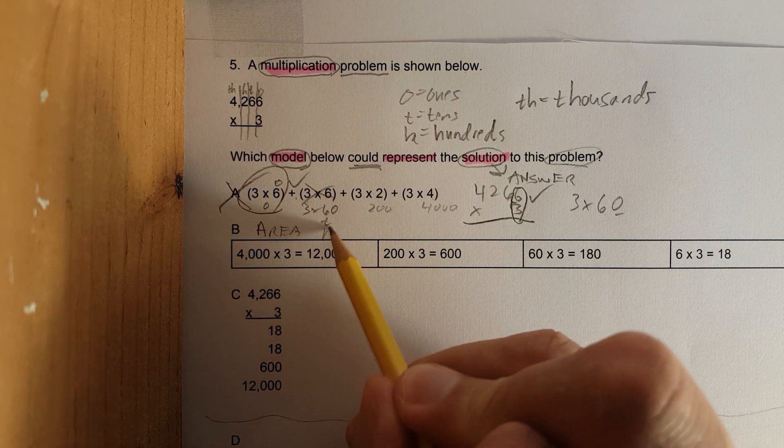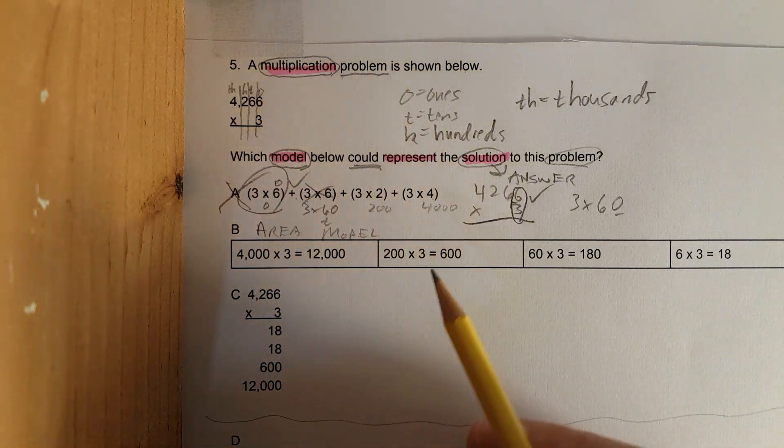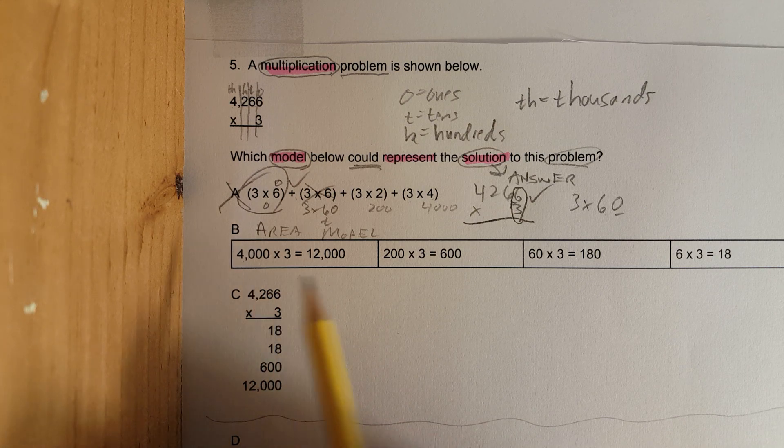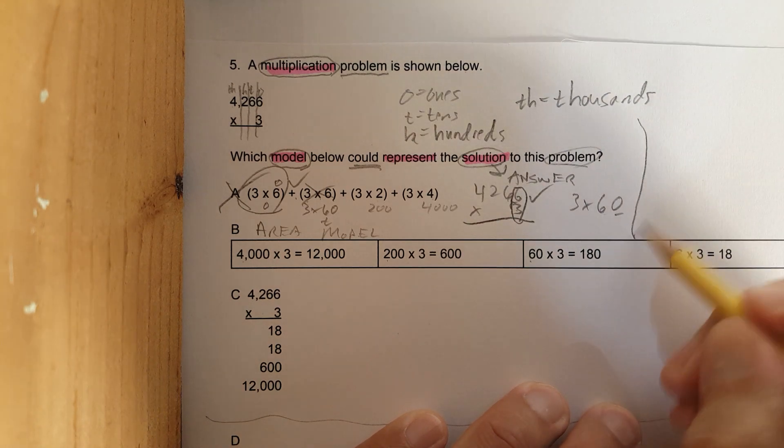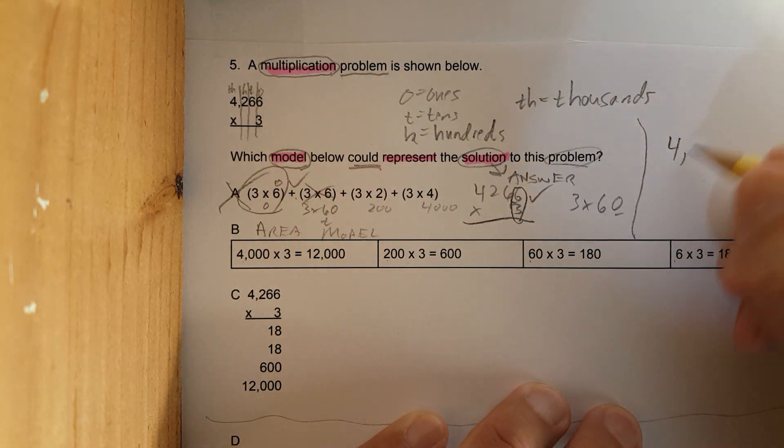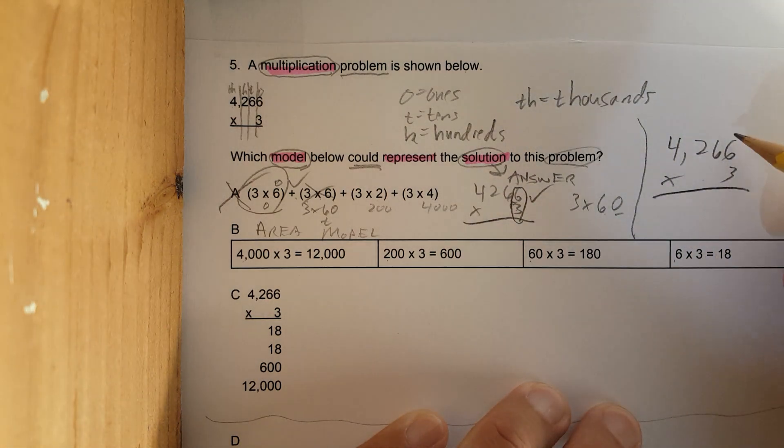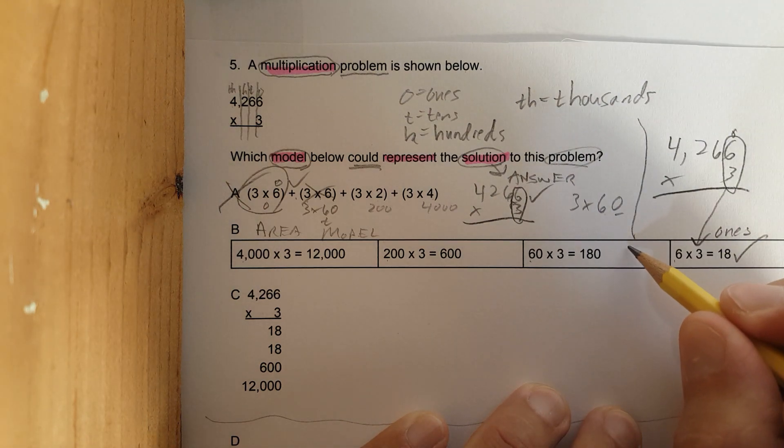Go back a couple problems ago, you can see it dissected. For area model we have thousands, hundreds, tens, and ones. I'm gonna write the problem up here: 4,266 times 3. Let's go through this one at a time. First, the ones place. Here's the ones place. Three times six is eighteen. Check. Let's go to the tens.